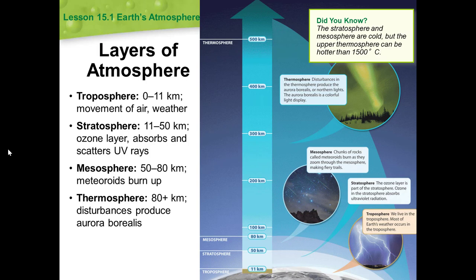The stratosphere is the layer of the atmosphere above the troposphere. The stratosphere extends from 11 to 50 kilometers above sea level. The gases in the stratosphere do not mix much; therefore, once some substances, including pollutants, enter it, they usually stay there for a very long time.